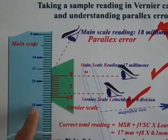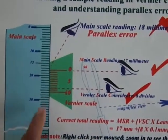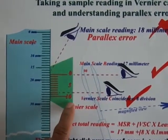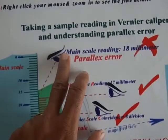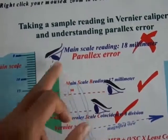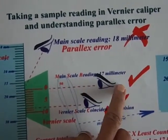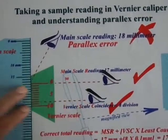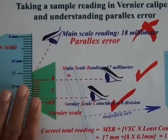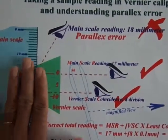This is main scale and this is the vernier scale. The field of view should be like this and we should avoid such a field of view. The perspective of view should be perpendicular to this interfacing layer.